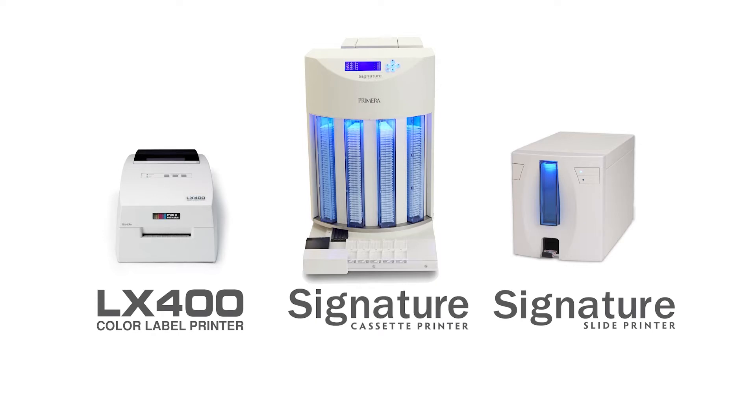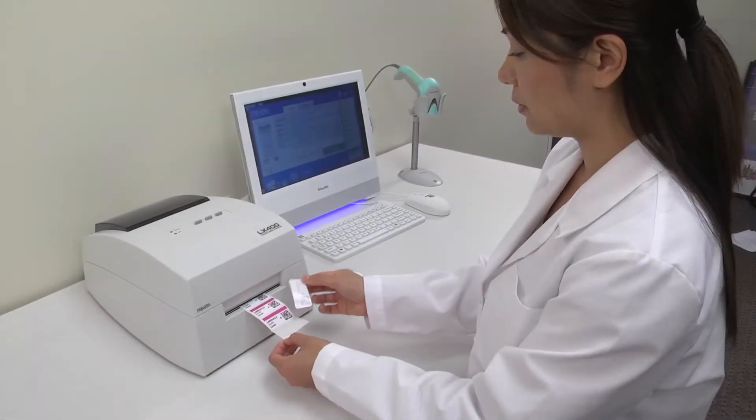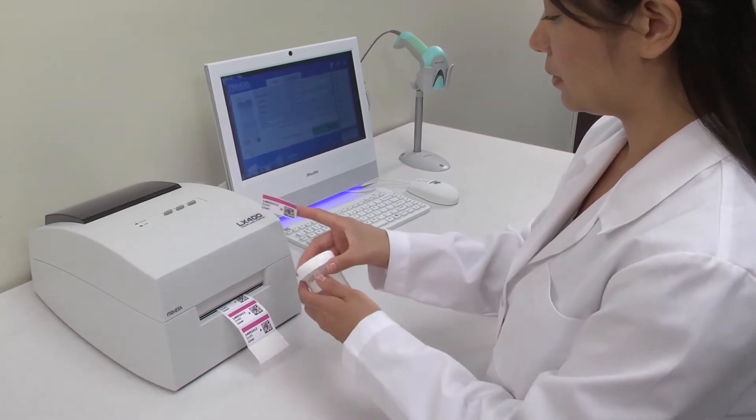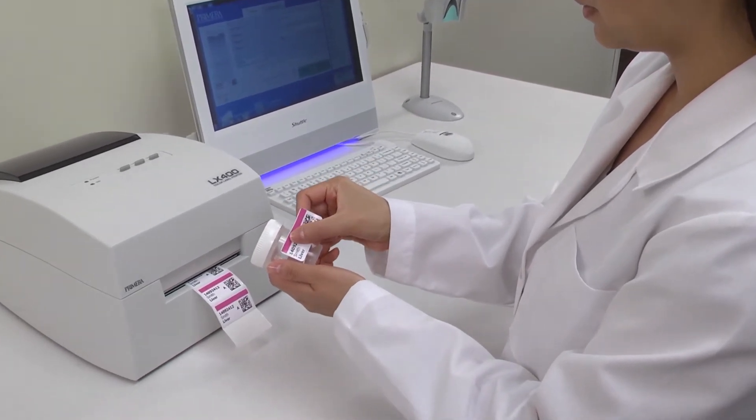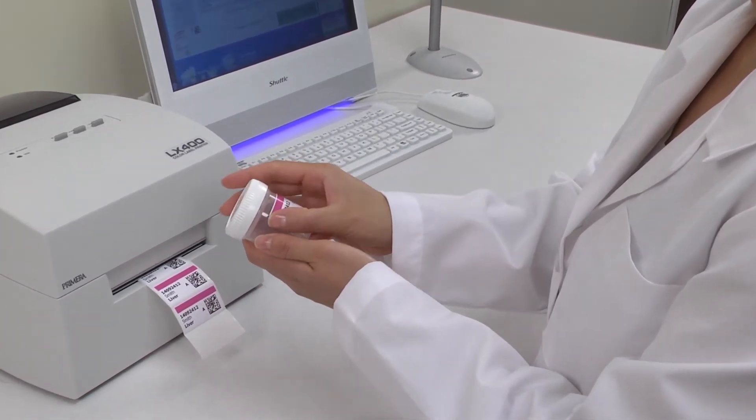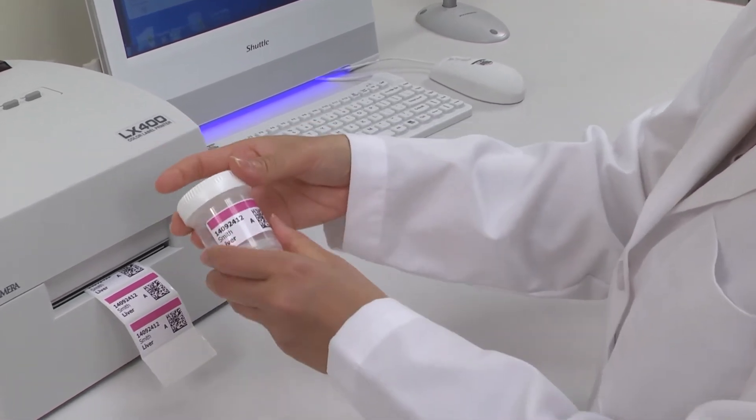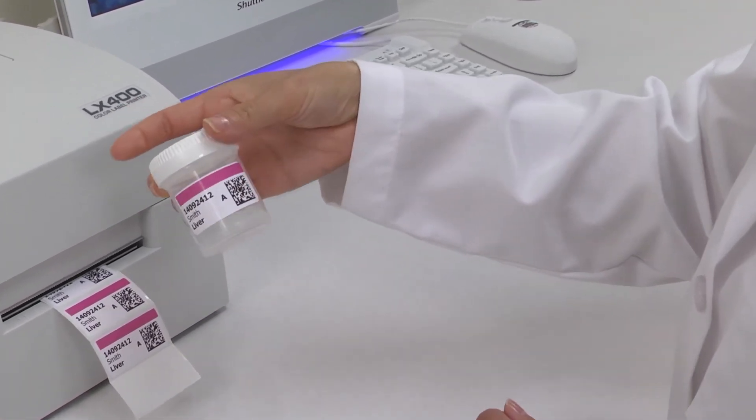Primera has all the hardware and software you need to make sure that specimens get labeled and identified properly each and every time. Starting with Primera's LX400 color label printer, you can print both text and barcodes as well as color graphics onto labels for specimen jars or requisition forms.